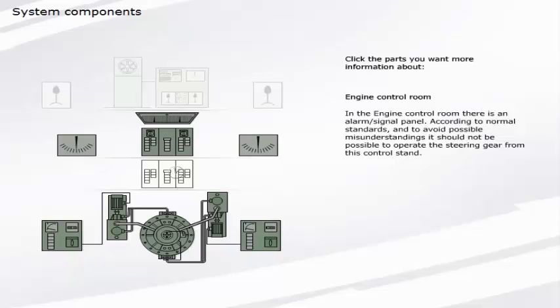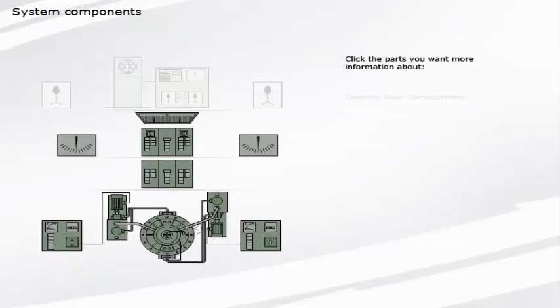Engine control room. In the engine control room, there is an alarm and signal panel. According to normal standards and to avoid possible misunderstandings, it should not be possible to operate the steering gear from this control stand.